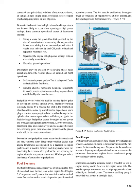The fuel system is designed to provide an uninterrupted flow of clean fuel from the fuel tank to the engine. The fuel must be available to the engine under all conditions of engine power, altitude, attitude, and during all approved flight maneuvers. WSC aircraft with carburetors have engine-driven fuel pump systems. A diaphragm pump is the primary pump for two-stroke engines — air pulses in the crankcase actuate a diaphragm and provide fuel under pressure to the carburetor. Four-stroke engines have a mechanical pump driven directly off the engine. Sometimes an electric auxiliary pump (also known as a boost pump) is provided for engine starting and in the event the engine pump fails, controlled by a switch on the flight deck.